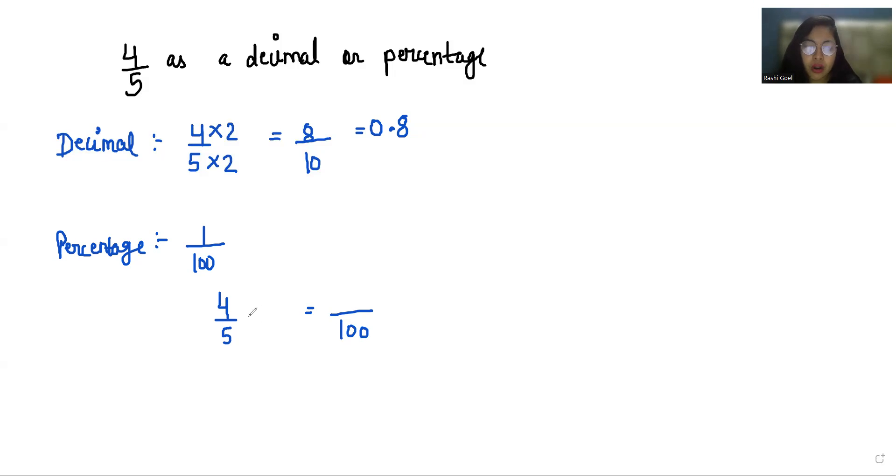Now I have to check whether to multiply or divide to get 100 in the denominator. In the table of 5, 100 comes at the 20th place. So I have to multiply by 20.